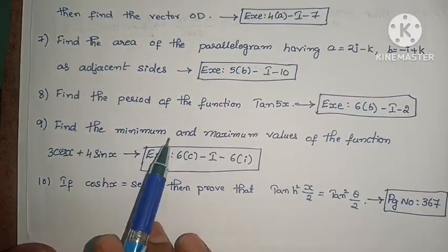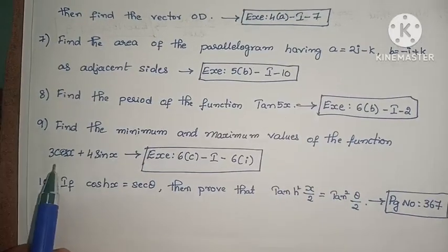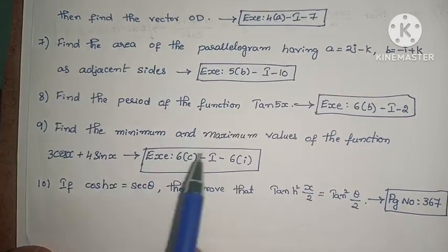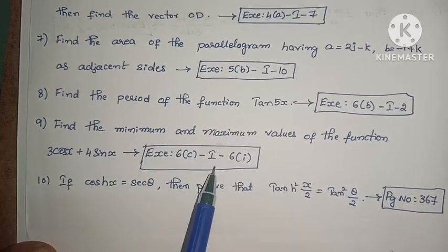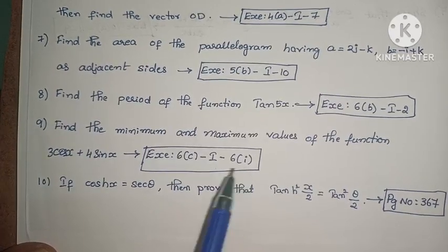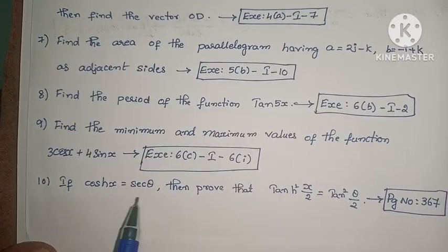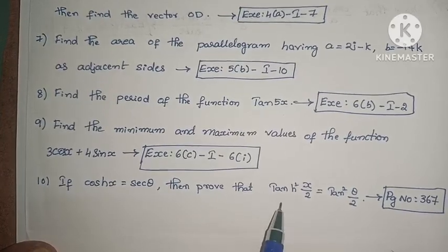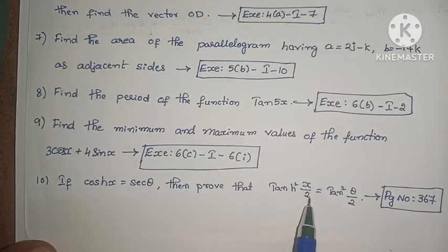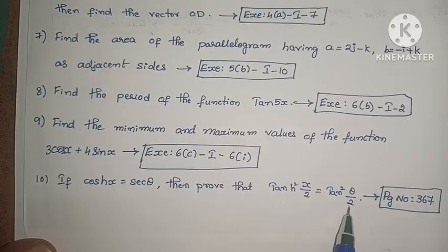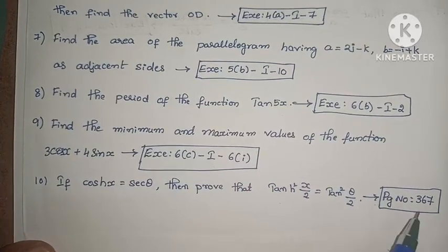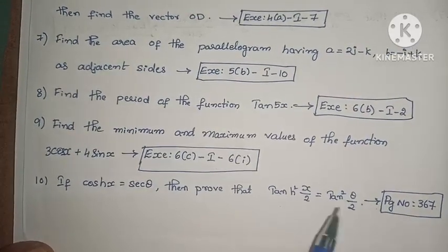Next, find the minimum and maximum values of the function 3cos x plus 4sin x. Exercise 6, First Roman, Sixth, First one. Next, if cosh x equals sec theta, then prove that tanh squared x by 2 equals tan squared theta by 2. Example problem on page 367, I already explained this problem.